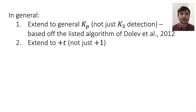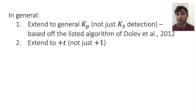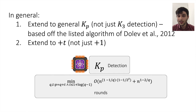In general, we extend this to cliques of all sizes, not just K3 detection. It is based on taking the listing algorithm that existed in the congested clique and modifying it to work with our Grover searches. We also extend it to doing plus-t and not just plus-1 by incorporating the earlier results for extending to larger cliques. The final result, though complicated in terms of plugging in values, improves K(P) detection for all values of P in the quantum distributed setting.